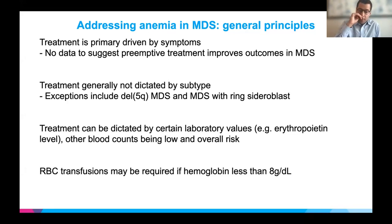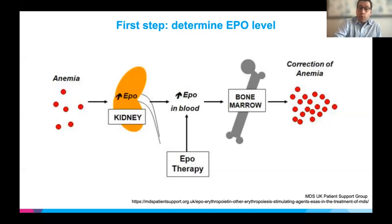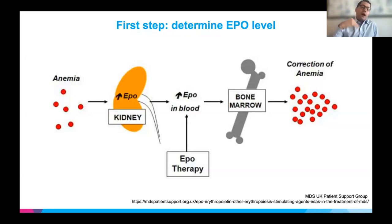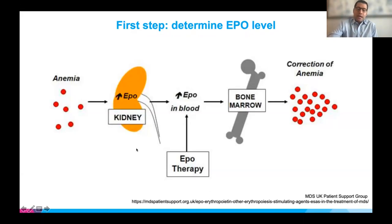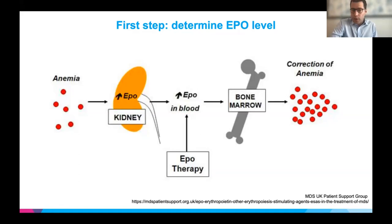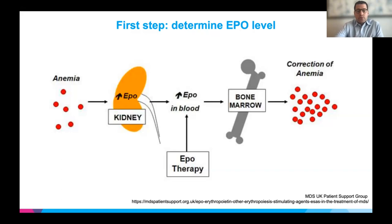The first step when addressing anemia in MDS is measuring erythropoietin, or EPO — a hormone made in the kidneys in response to anemia. If you have a high EPO level, it stimulates the bone marrow to correct that anemia. We have exogenous, manufactured EPO that can be injected to stimulate the bone marrow. The issue is: if you already have a high EPO level in your blood, giving more EPO through injection will not help stimulate more hemoglobin production.